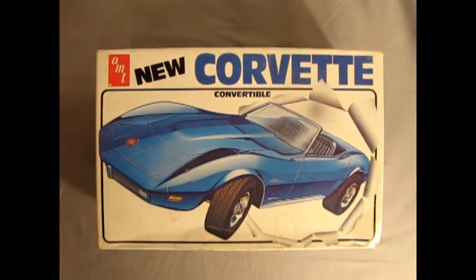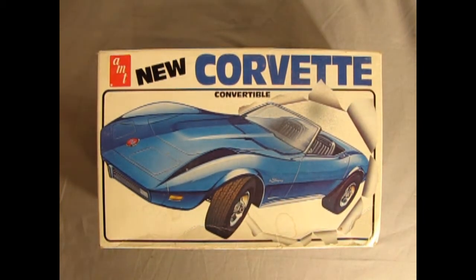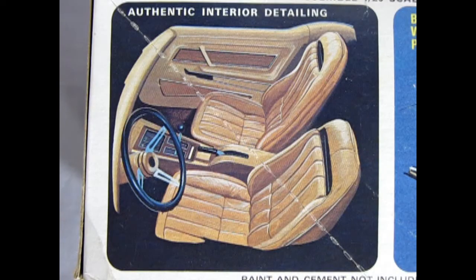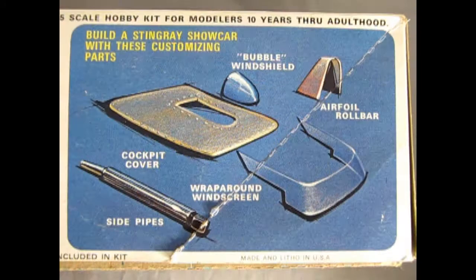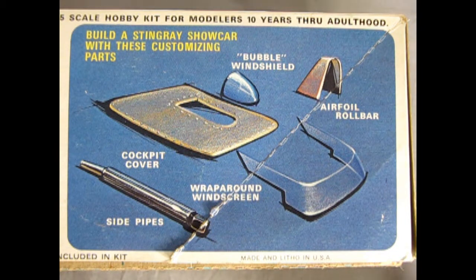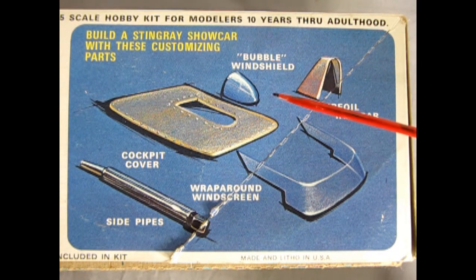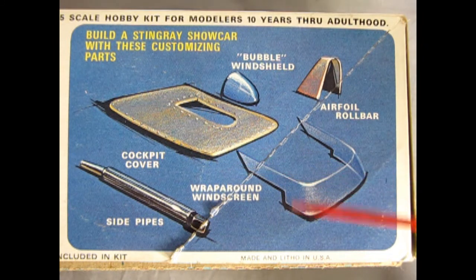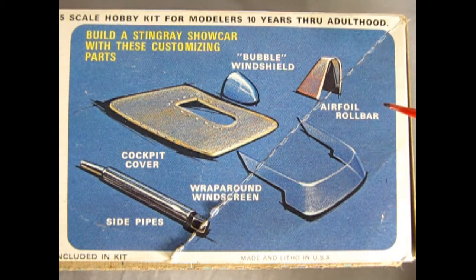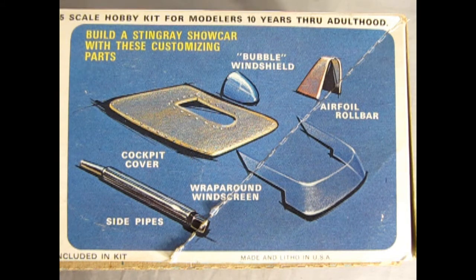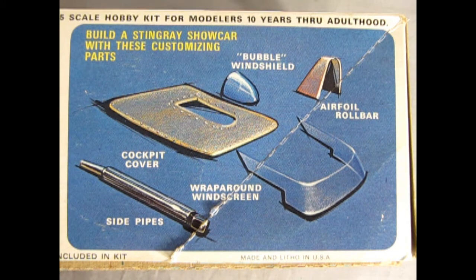Now here's a groovy kit going all the way back to 1974 and you know that she's a winner. This of course is the new Corvette Convertible by AMT. The 1974 Corvette was the first to have body-colored impact bumper treatment for both front and rear. This model kit has authentic interior detailing. You can also build a Stingray show car with these customizing parts: bubble windshield, cockpit cover, wrap-around windshield, side pipes and airfoil roll bar. The 1974 Corvette was the last with a real dual exhaust non-catalytic converter system.